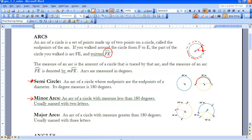So major arcs are named with three points. So in this case down here, FGE would be the way that we could measure all the way around the long way, so to speak. So we would name that FGE.